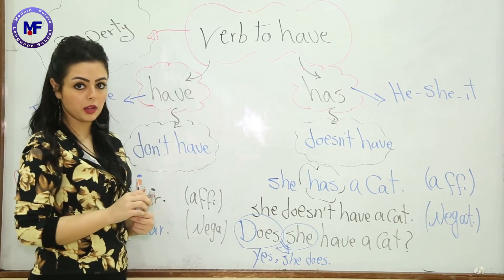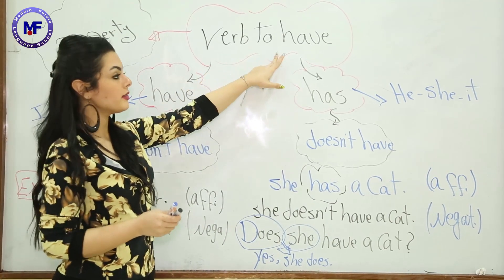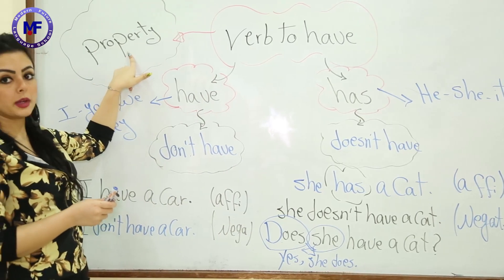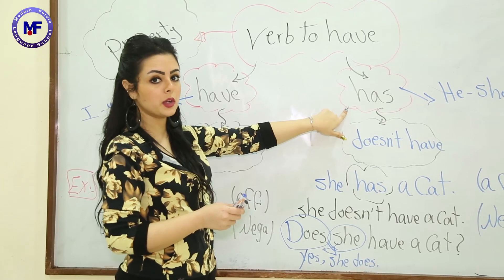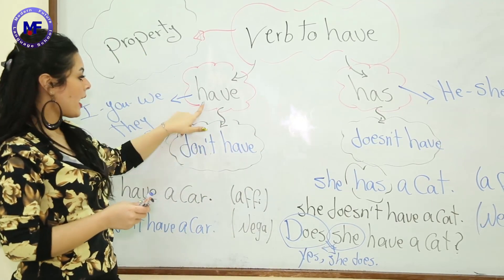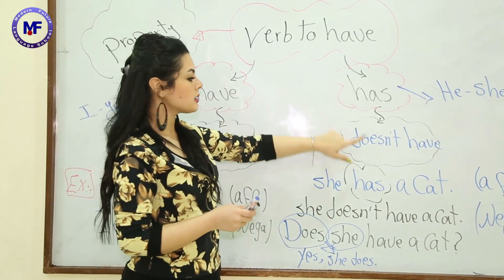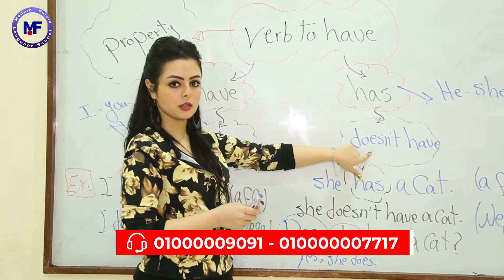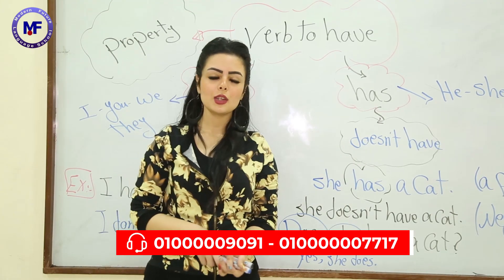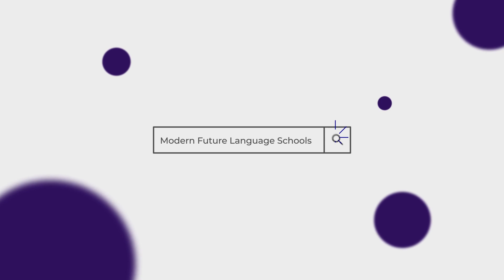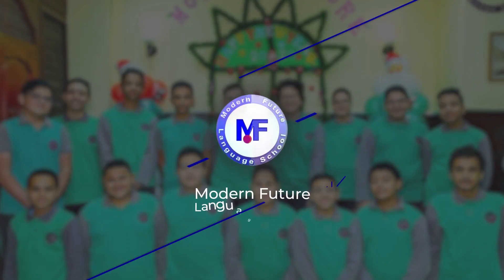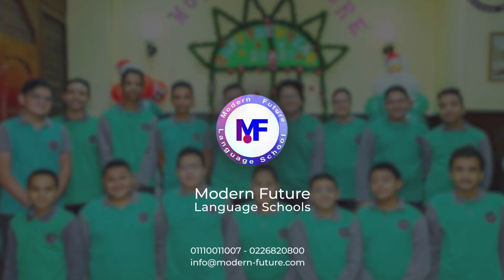That's so simple. The verb 'to have' is used to talk about property. You have two types: 'have' and 'has' in the affirmative, 'don't have' and 'doesn't have' in the negative. Thank you so much — don't forget to like, share, subscribe and write your comments below. Bye!